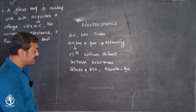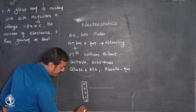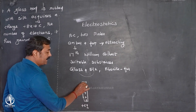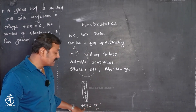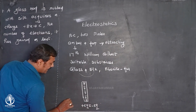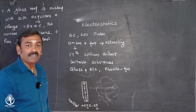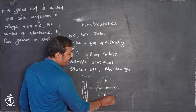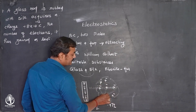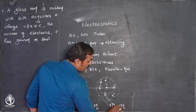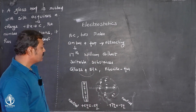Let us consider a glass rod. Suppose it has five positive charges and five negative charges — they are equal, so it is electrically neutral. Similarly, a silk cloth has seven positive and seven negative charges — equal — so it is also electrically neutral.